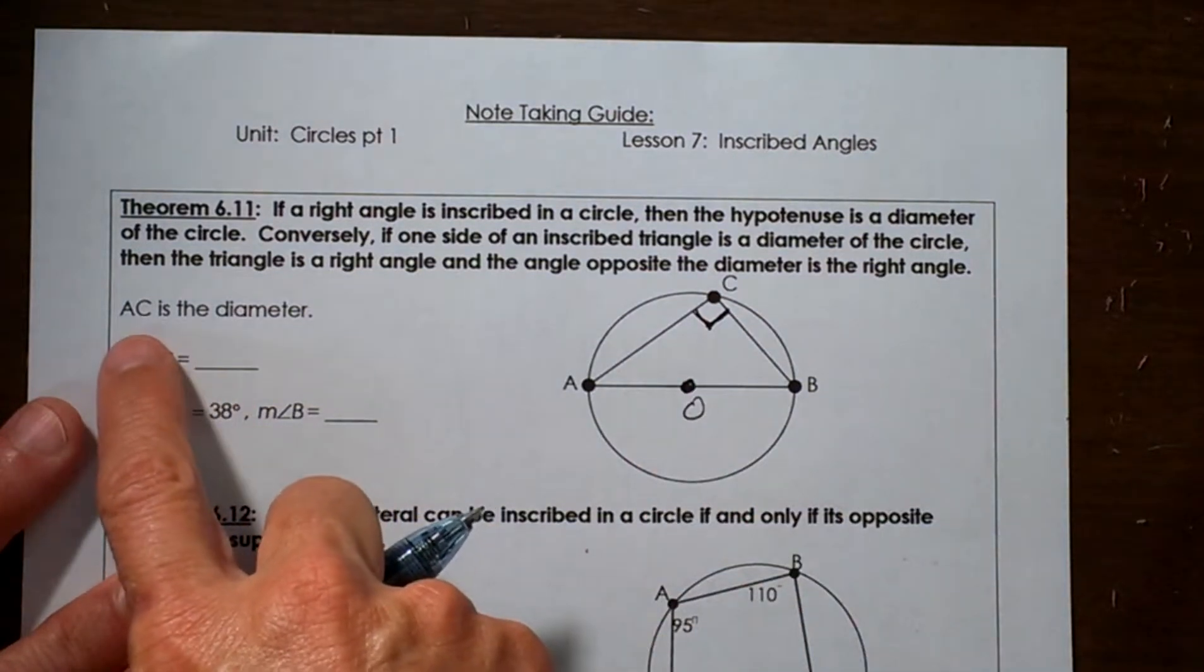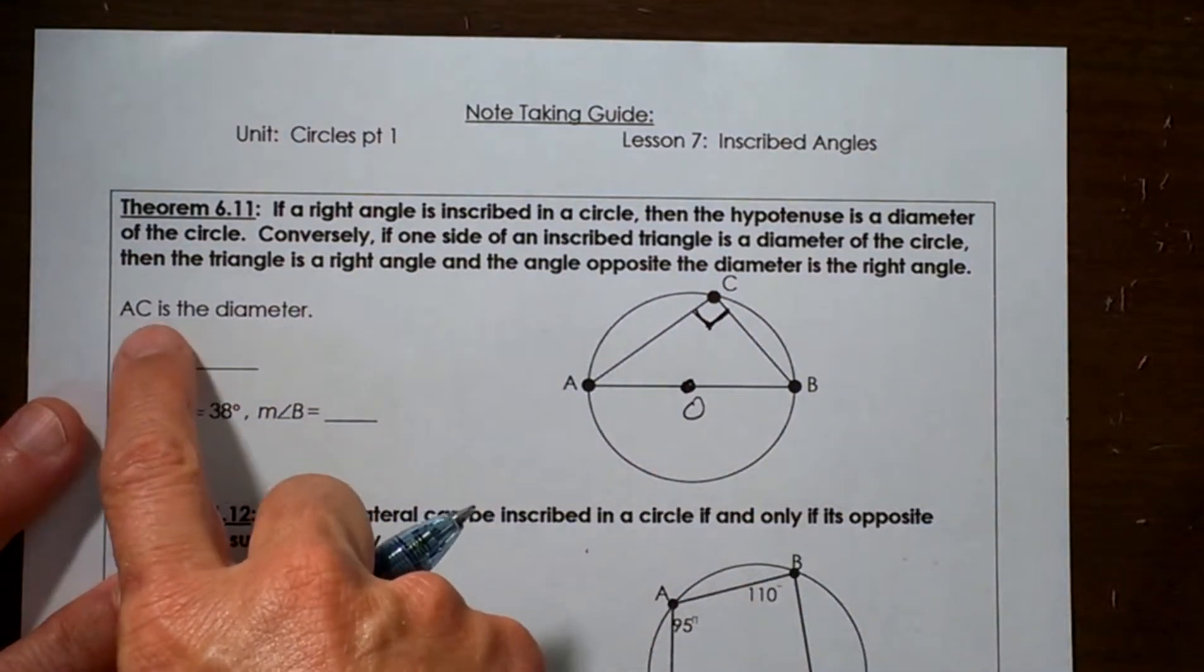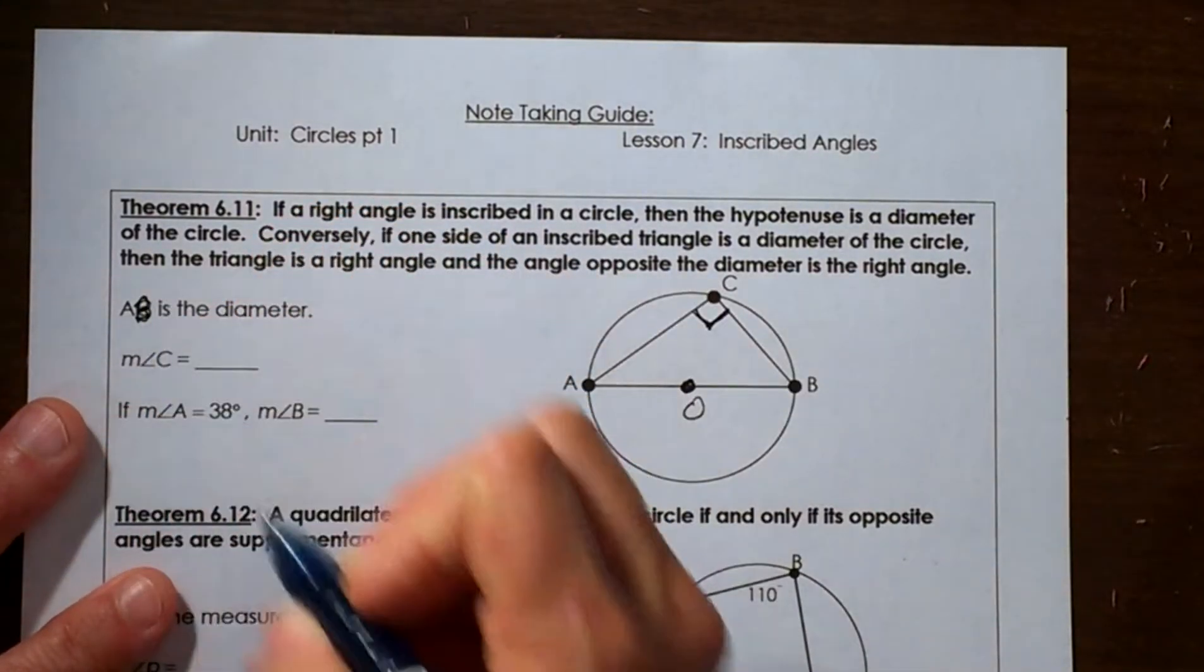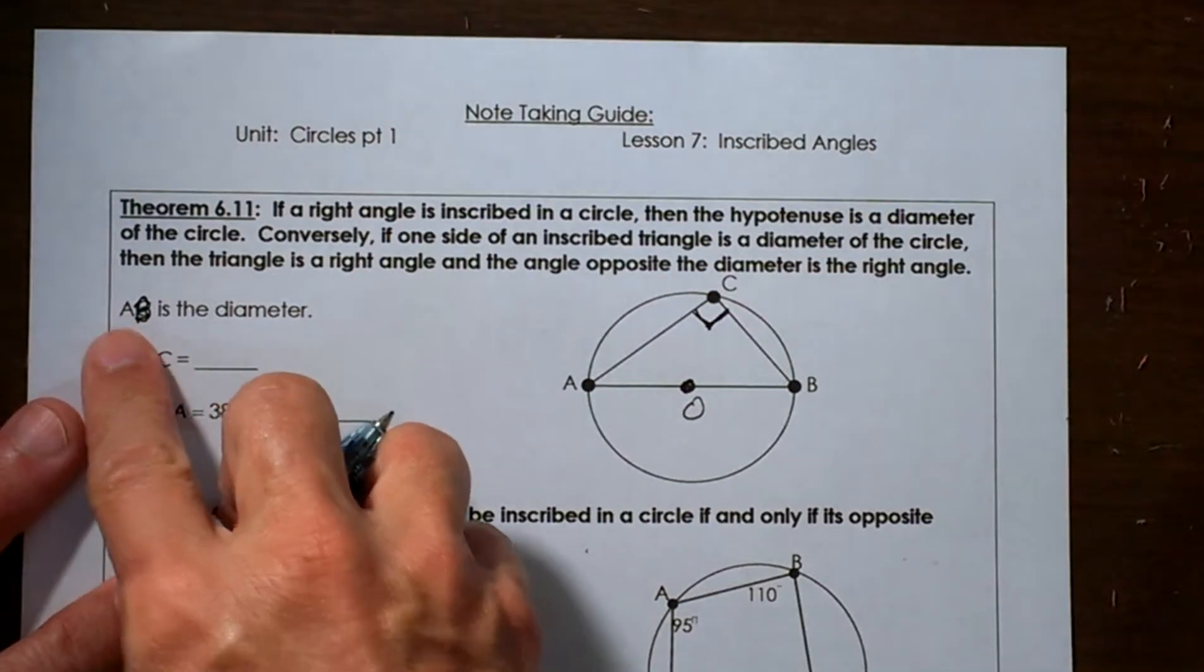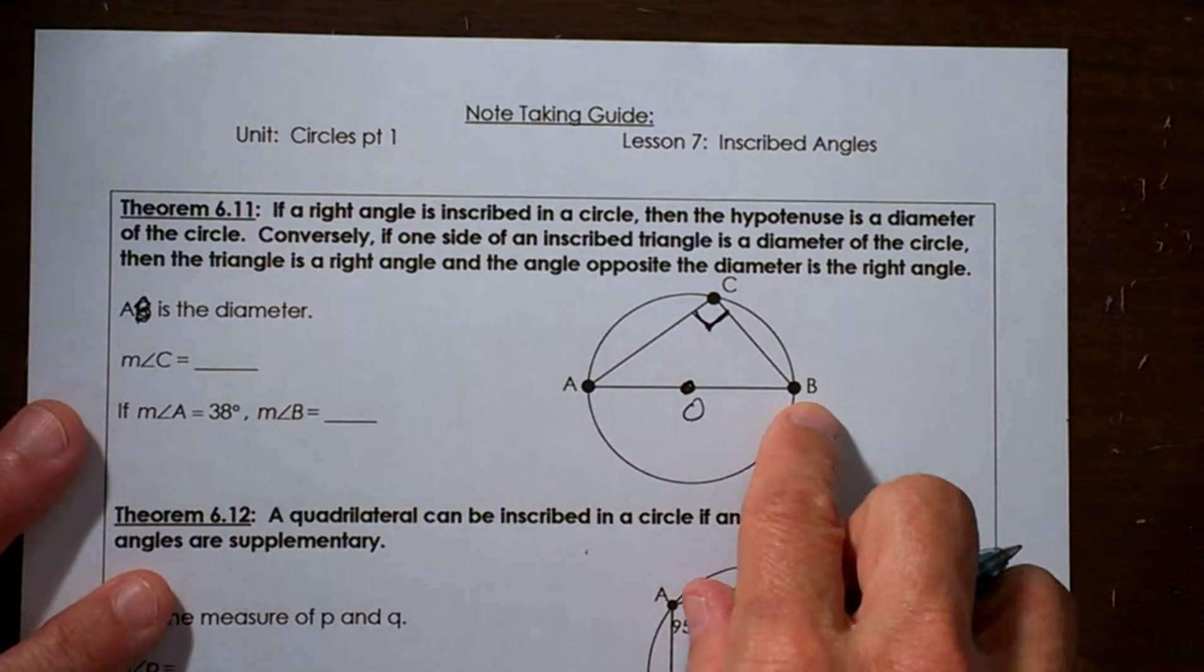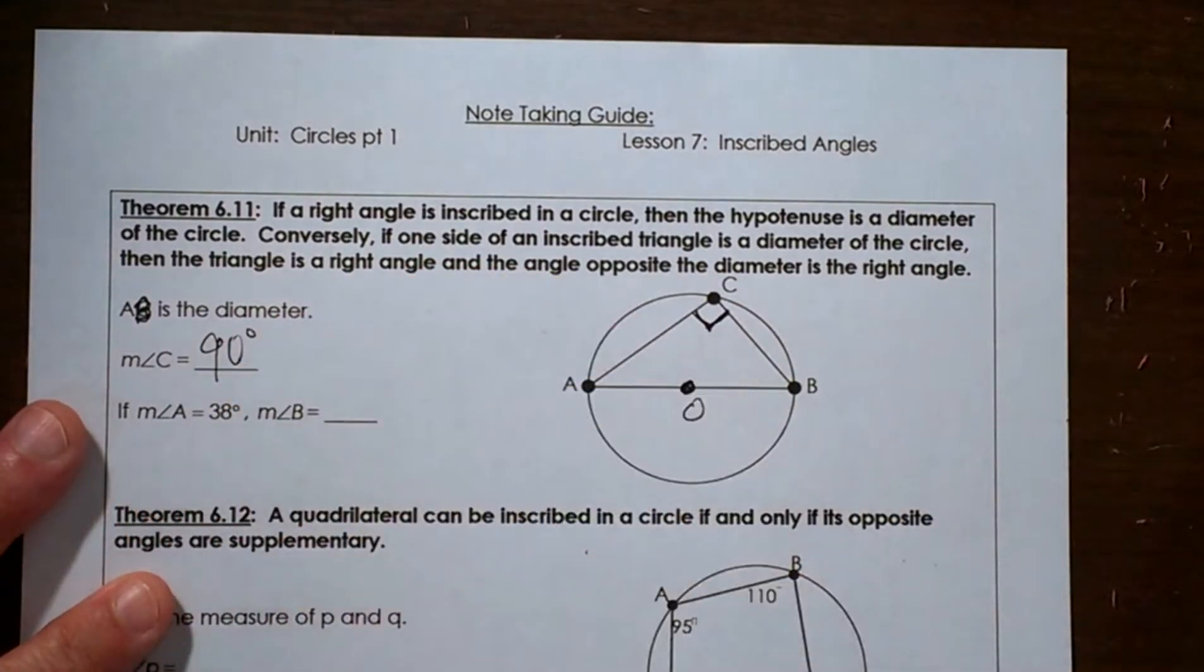Okay, so let's look at this. AC is a diameter—whoops, it should be AB is a diameter, not AC. AB is a diameter. Find the measure of angle C. Well, we know that if it's the right angle, it's got to measure 90 degrees.